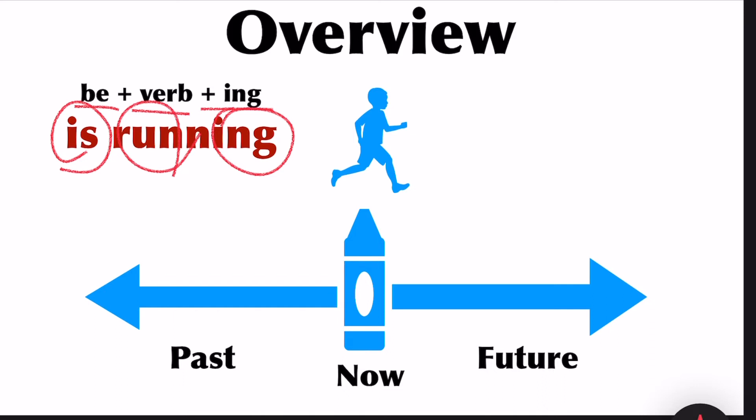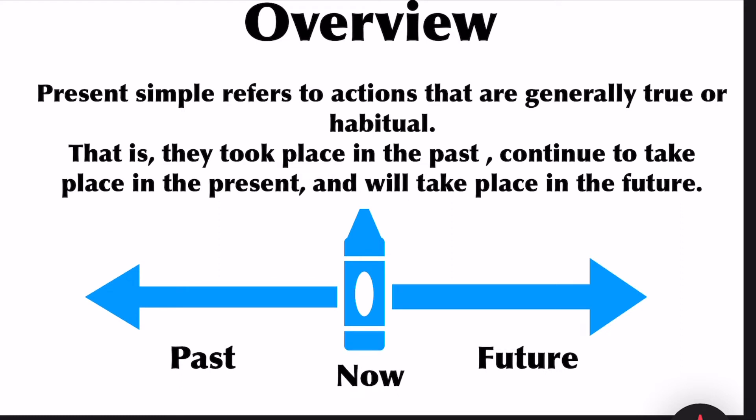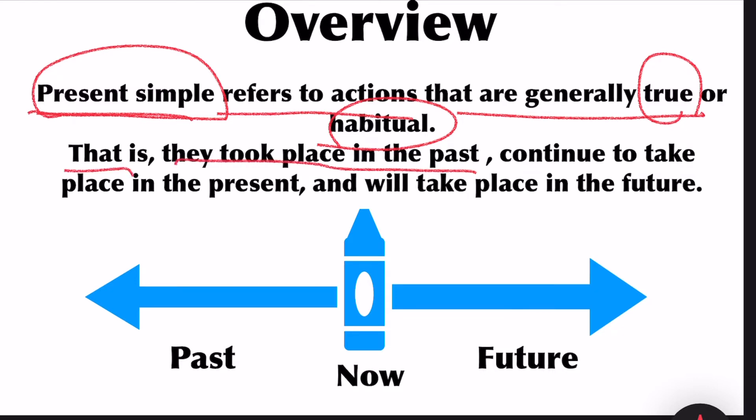He is running at the time of speaking. Next we are moving on to present simple. Present simple refers to actions that are generally true or habitual, that is they took place in the past, continue to take place in the present, and will take place in the future.